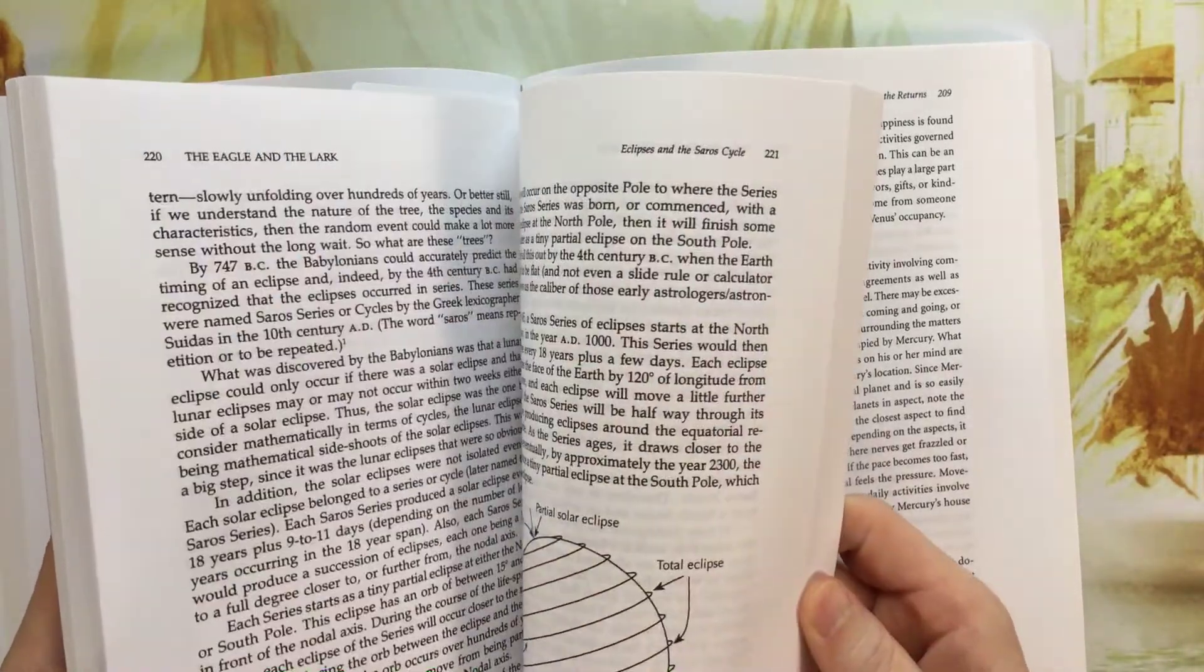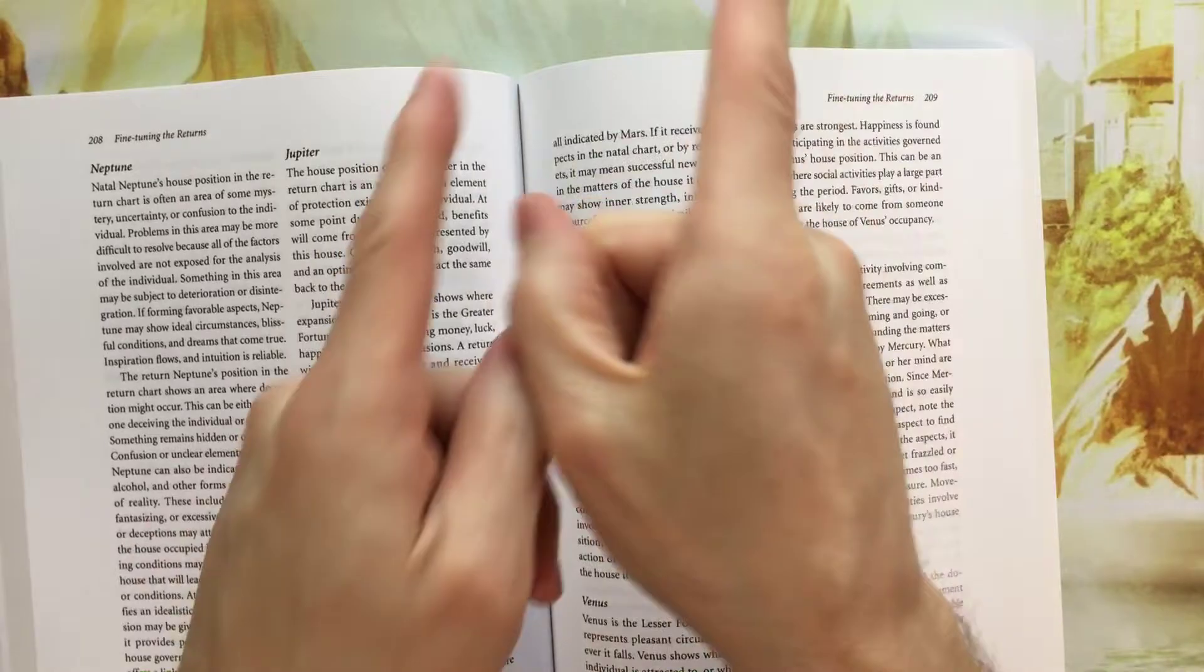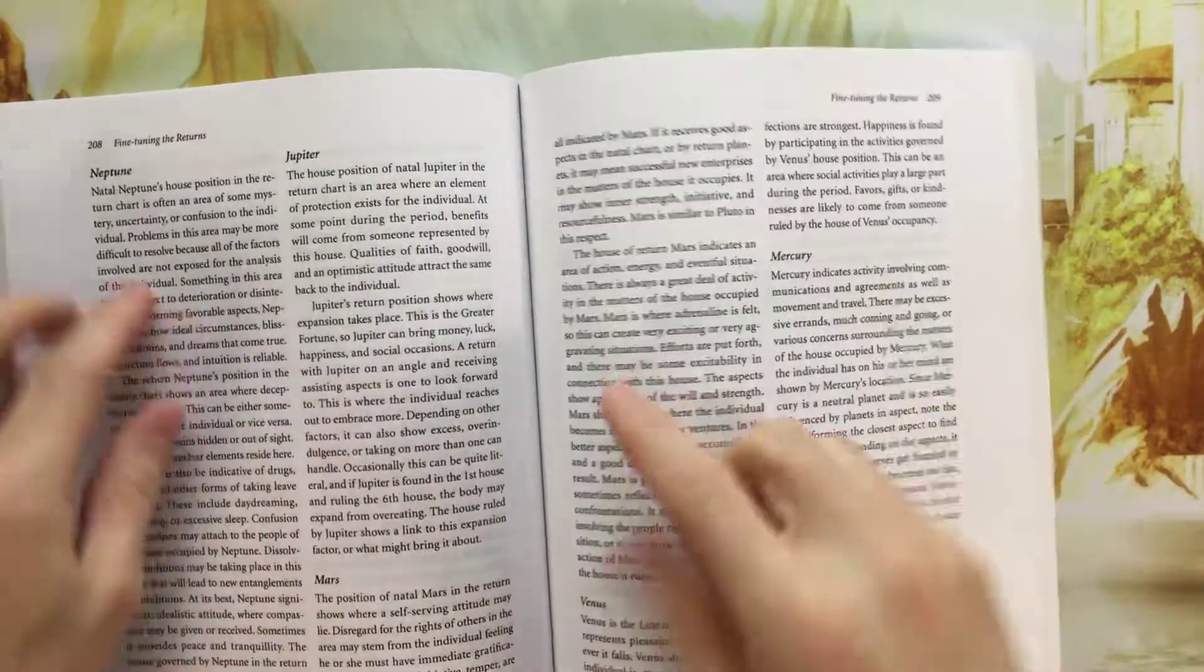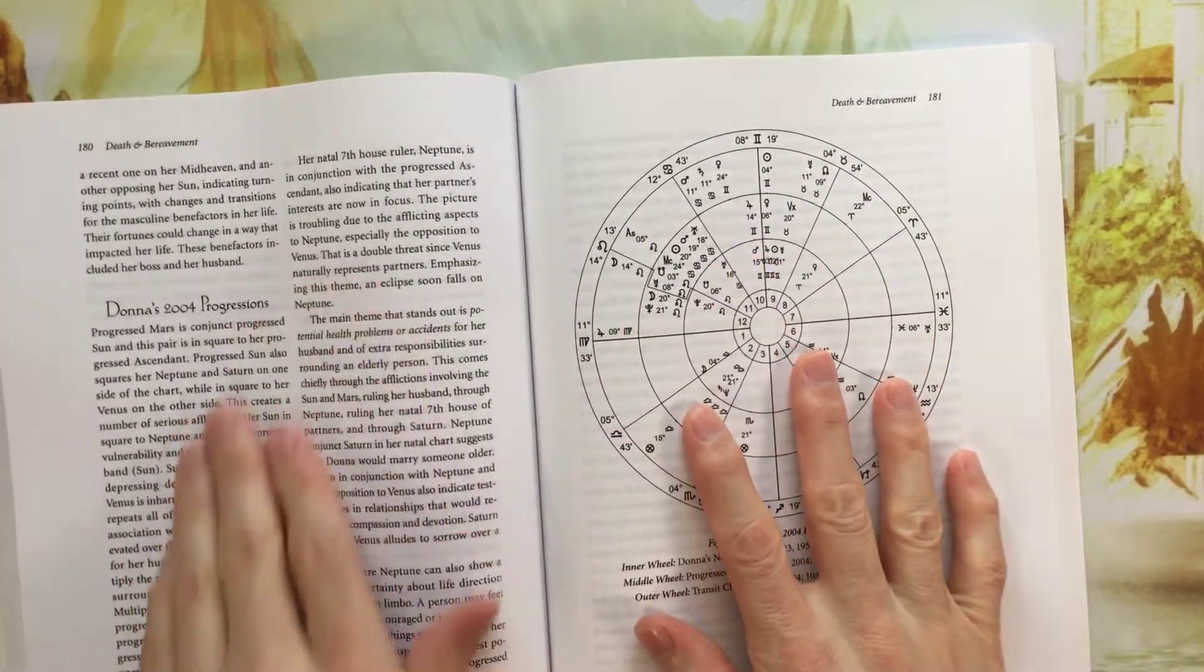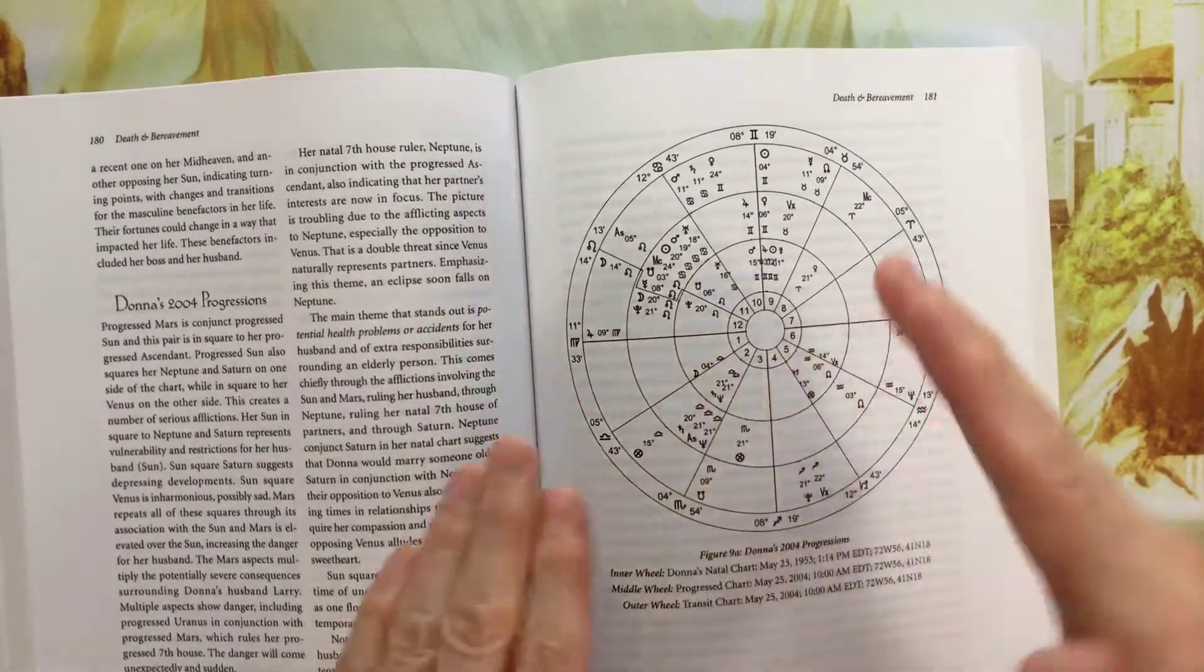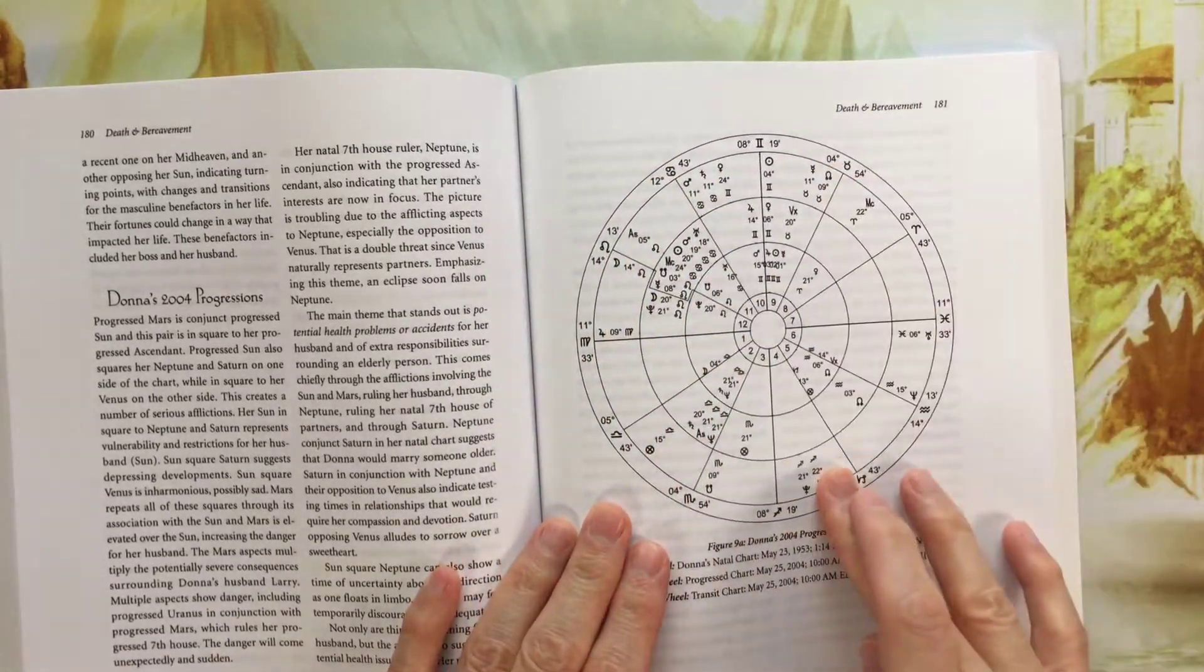So I talked about time maps, eclipses. This book is so good. Sorry, I'm obsessing on this book. But after that book, this book is really good because, again, we have a ton of examples. We have real-life situations and then what to look for in the chart that reflect those situations.